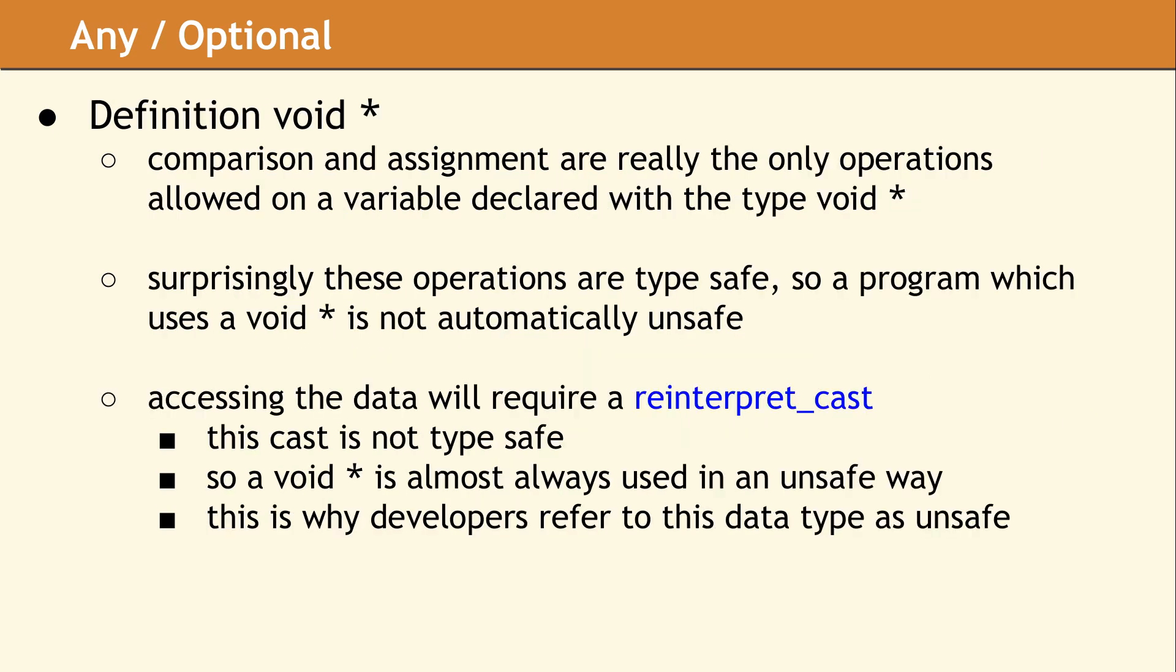In order to understand type safety, let's look at an example. The void star data type is often found in legacy code, and it makes a very interesting example for our discussion. This data type represents a pointer to an unknown type.